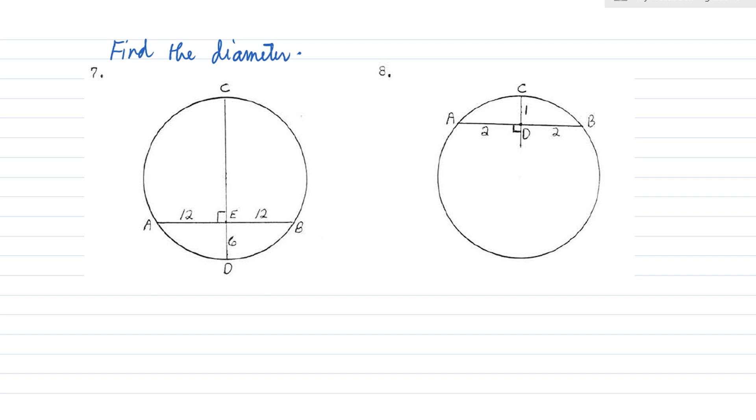Remember theorem number three, if you have a chord that is bisected by a line segment, that line segment should pass through the center. So, we can say this is the center O. And then let's draw the radius OA.